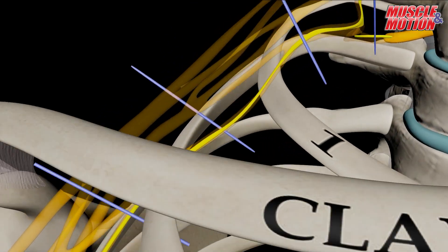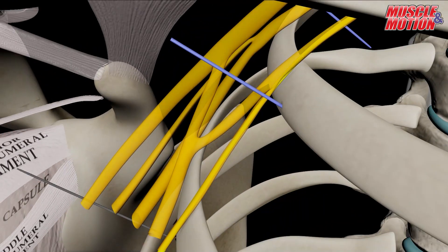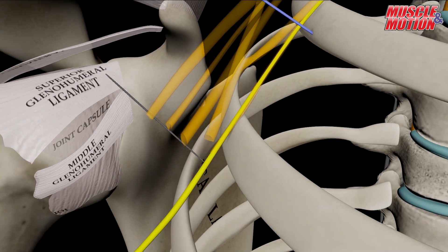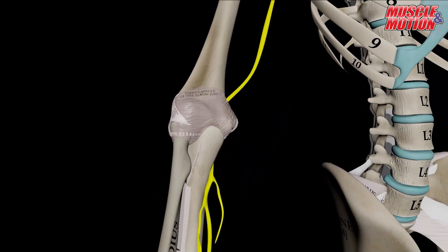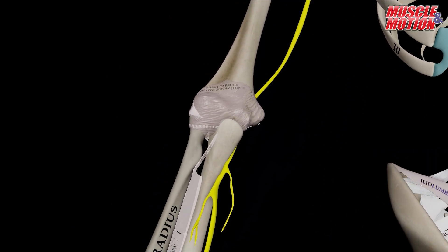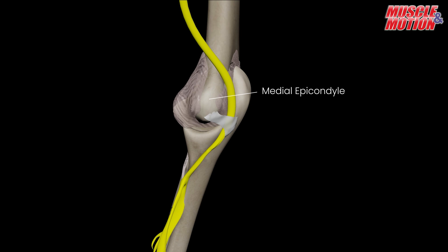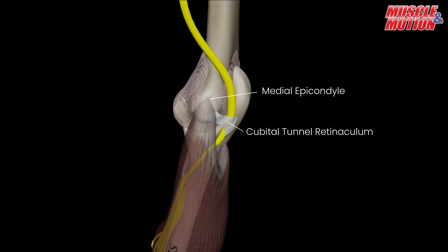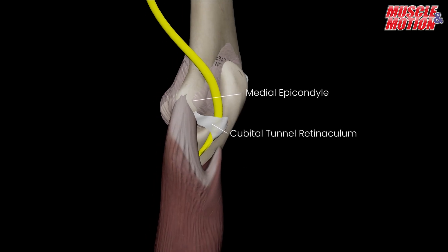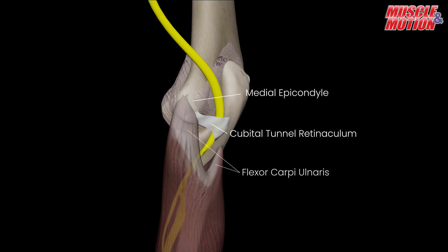From the medial cord of the brachial plexus, it descends along the medial side of the upper arm toward the elbow. In the arm, it courses posterior to the medial epicondyle within the cubital tunnel and enters the forearm between the two heads of the flexor carpi ulnaris.